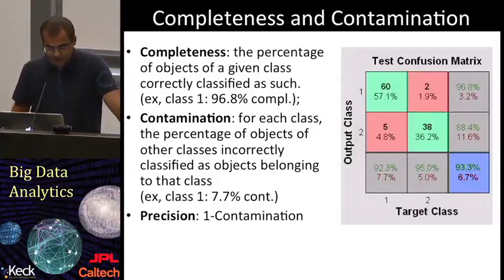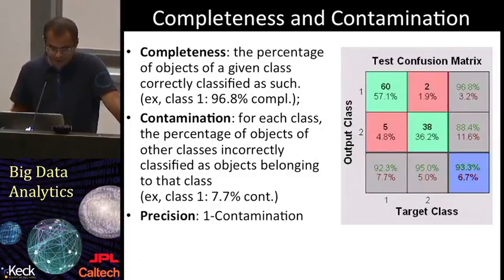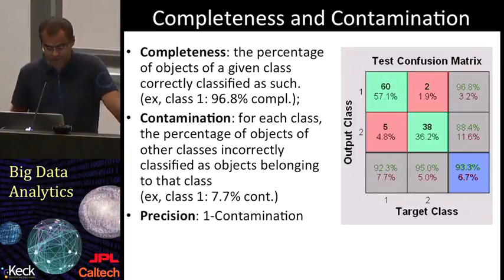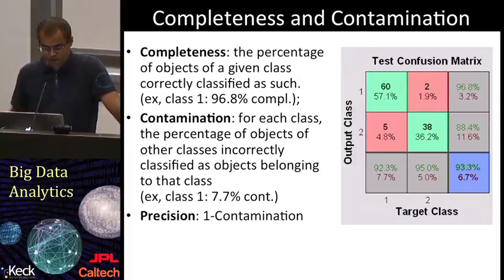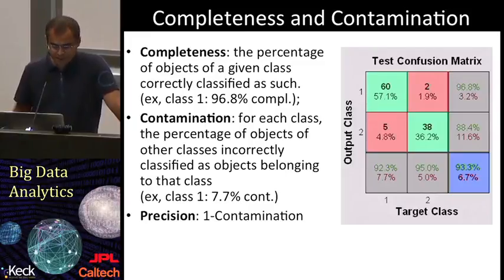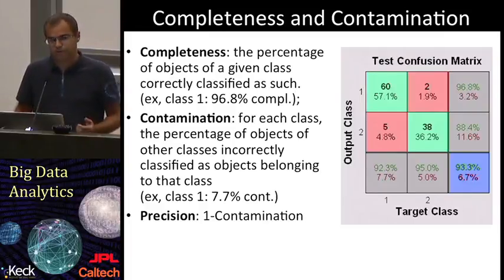Two other important measures are completeness and contamination. Completeness is the percentage of objects of a given class correctly classified as such. Contamination for a given class is the percentage of objects of other classes incorrectly classified as belonging to that class — so they contaminate that class. Precision, defined as one minus the contamination, can be seen as a measure of the quality of your classification, while completeness is more a measure of quantity. High precision means an algorithm returns substantially more relevant results than irrelevant, while high completeness means an algorithm retrieved most of the relevant results.